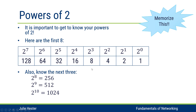We're going to use this chart when we do our conversions, where we've written out the first eight powers of two — that's two to the zero power through two to the seventh power. When you're working with subnetting and computer networking, it can be helpful to know the next three powers of two: two to the eighth, ninth, and tenth power. Two to the tenth power is particularly neat because its decimal equivalent starts with a ten — two to the tenth is one thousand and twenty-four.